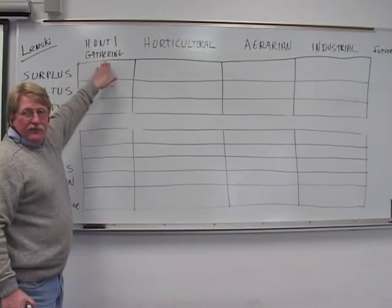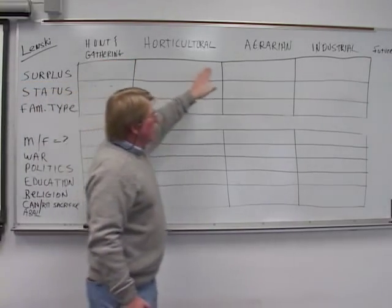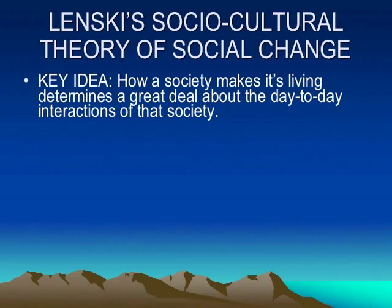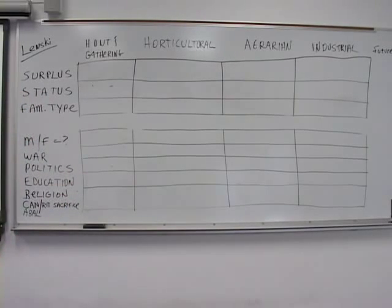What he argues is that the type of society, the way we make our living, whether we're hunters and gatherers or working in factories in industrial society, determines a great deal about how we behave day to day, what our families are like and so forth. So let's go through this.